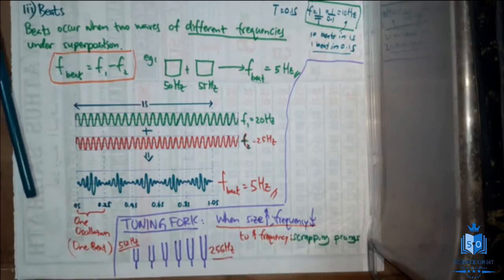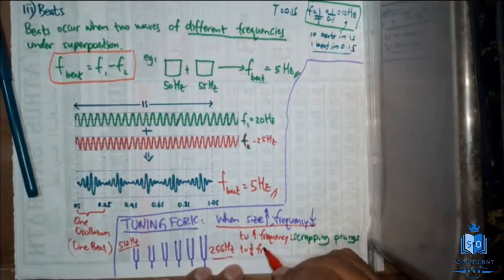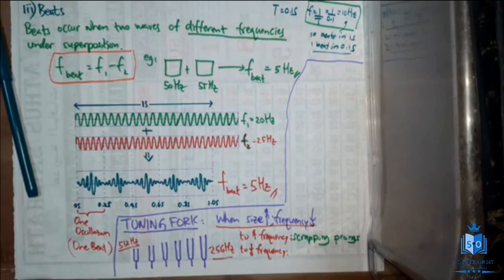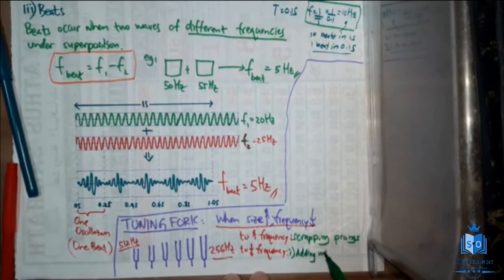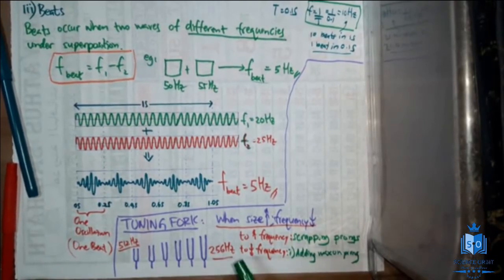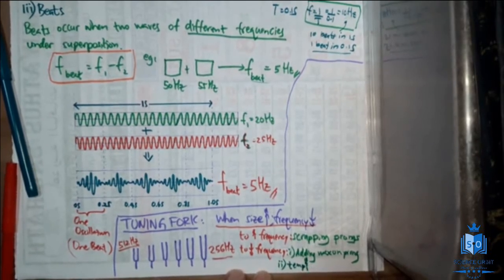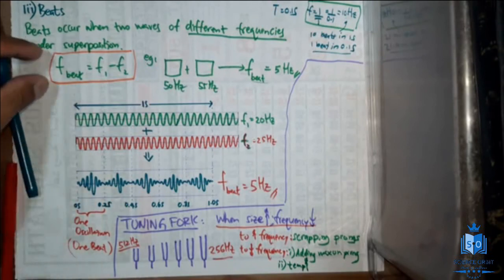To decrease the frequency of a tuning fork you can do two things: one is adding wax on the prong — when you add wax the tuning fork gets bigger so the frequency reduces. The second thing is heating — increasing the temperature also reduces the frequency of the tuning fork.